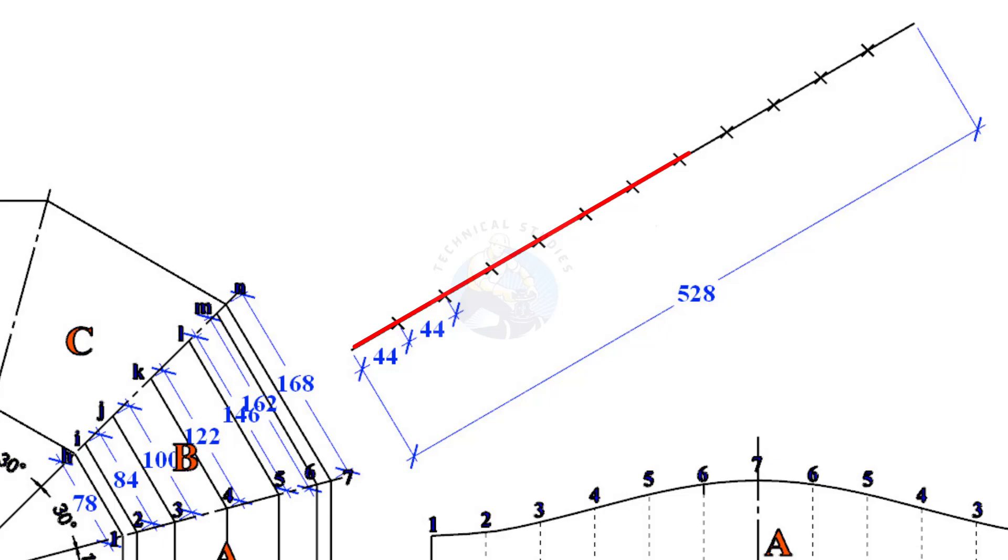Draw a line perpendicular to the line N7. The length of the line shall be 528mm. Divide the line into 12 equal parts in the same way as before.